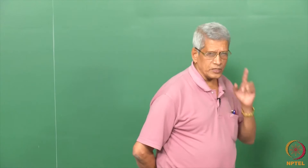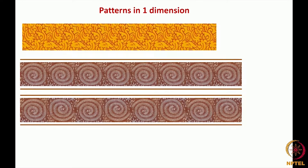Let us look at a pattern. Can you make out whether any periodicity is there in the first pattern? Yes, there is some periodicity — some pattern is getting generated and that pattern repeats itself. In the second and third ones, the second one is easy to identify, but the first one is a little difficult. In the third one, the type of pattern which is getting repeated is just one motif.